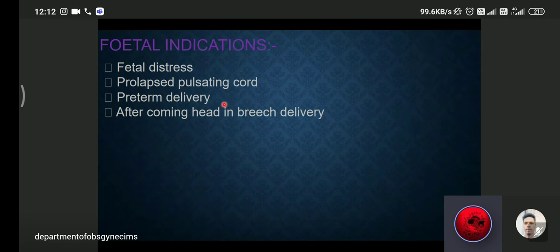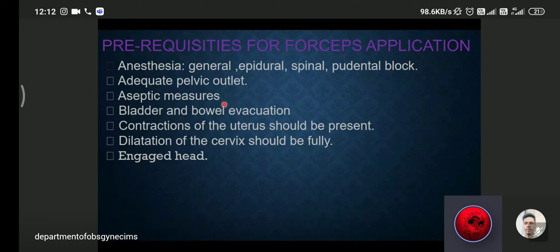Now we come to the prerequisites for forceps application. Anesthesia: general, epidural, spinal, or pudendal block. Then adequate pelvic outlet, that means you have to find out the contracted pelvis or assessment of pelvis should be done before application of forceps with all aseptic measures. Bladder and bowel should be evacuated. Contractions of uterus should be present. Dilatation of cervix is full. It should be full dilatation of cervix. Then only forceps will apply. And head should be engaged. These are the prerequisites for forceps application.